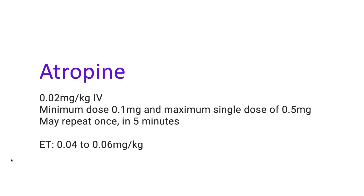Atropine sulfate is an anticholinergic drug that accelerates sinus or atrial pacemakers and enhances AV conduction. Administer atropine instead of epinephrine for bradycardia caused by increased vagal tone or cholinergic drug toxicity — for example organophosphates — or complete AV blocks. Atropine and pacing are preferred over epinephrine as the first choice treatment of symptomatic AV blocks due to primary bradycardia. Atropine is not indicated for AV blocks from secondary bradycardia due to reasons like hypoxia or acidosis. The rationale is that epinephrine can cause ventricular arrhythmias if the myocardium is chronically abnormal, hypoxic, or ischemic.